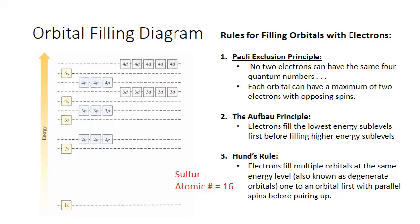Let's look at sulfur, with atomic number 16, meaning 16 electrons. We start at 1s and fill that completely — electrons 1 and 2. Then 3 and 4 go into 2s. Electrons 5, 6, and 7 go into 2p, one per orbital spinning in the same direction. Then we pair them up: 8, 9, 10. Then 11 and 12 go into 3s. We go to 3p: 13, 14, 15 each go into separate orbitals spinning in the same direction. Finally, electron 16 goes back to pair up in the first 3p orbital.